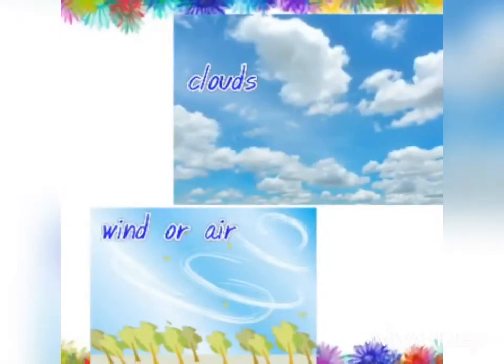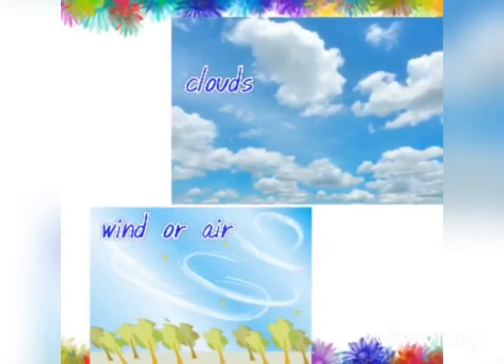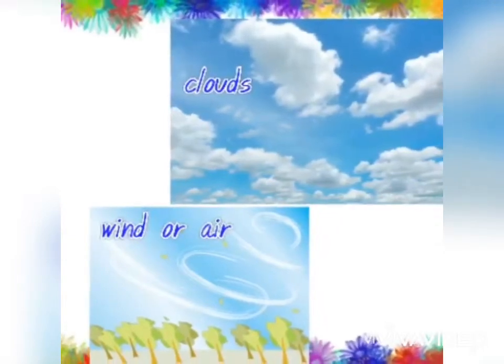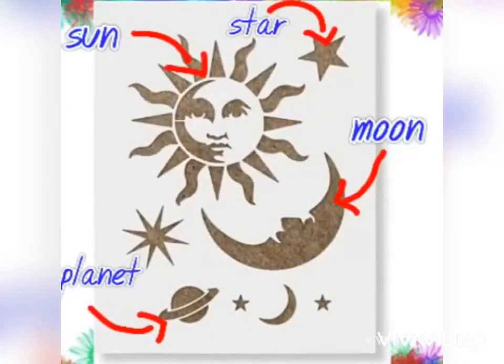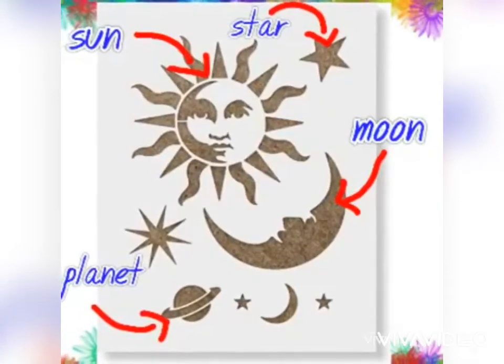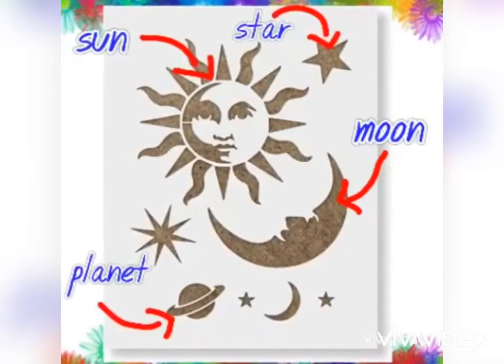Clouds, wind, or air are natural materials. Stars, sun, moon, and planets are also natural materials.